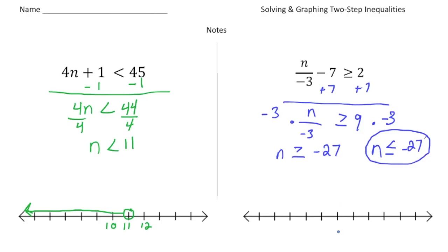Now to graph this. I'm going to put negative 27 right here. Because we're talking about negatives, negative 26 will be to the right and negative 28 on the left. Since n is less than or equal to negative 27, it's going to be a closed circle — because negative 27 could be one of our choices — and we shade all the values to the left of that closed circle.